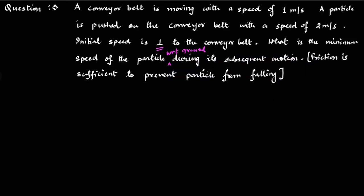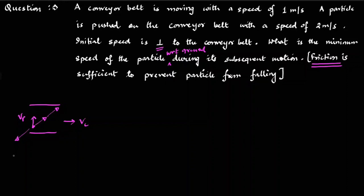I'll give you a hint: try to solve it just like a river-man problem. If you treat the conveyor as a river, the particle which is thrown perpendicular to it will always move in some direction, and this direction will remain constant. Why? Because friction opposes the motion, and therefore this direction will always remain constant — it will not change with respect to the conveyor belt.